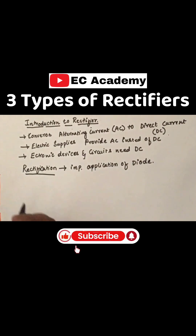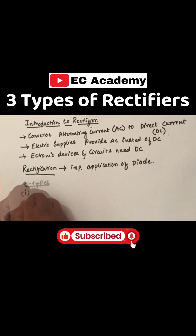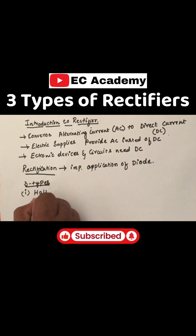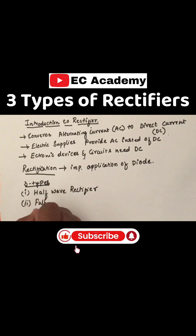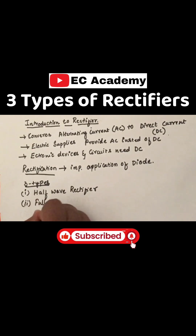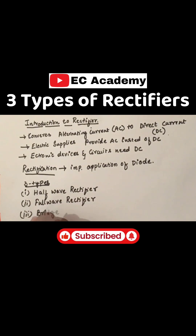There are three types of rectifier circuits: a half wave rectifier, a full wave rectifier, and the bridge rectifier.